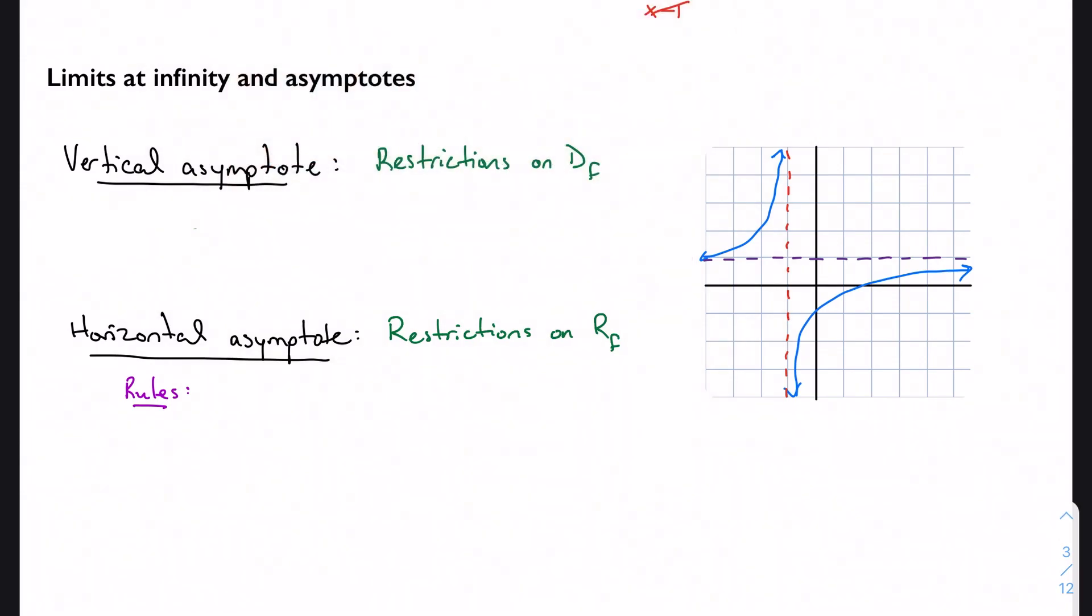But we can be more specific. We can update this. So our updated definition is to say that some number c, x equals c, is a vertical asymptote if the limit as x approaches that number c from the right approaches positive or negative infinity, and the same is true from the left.